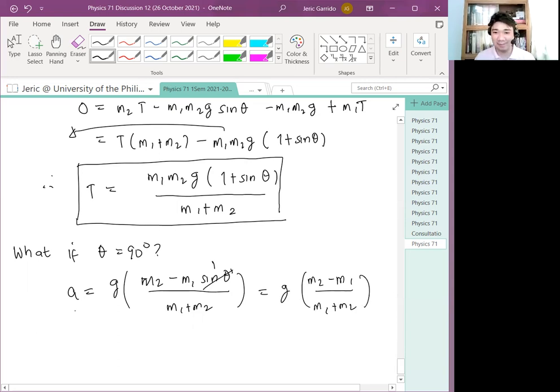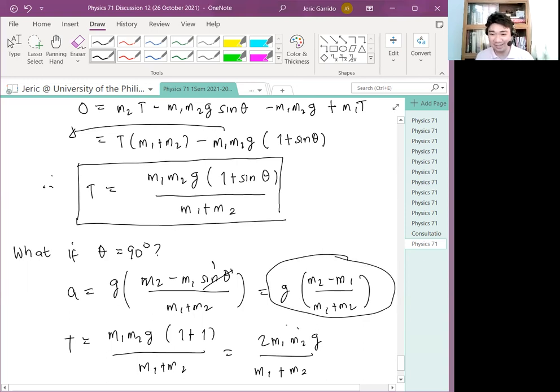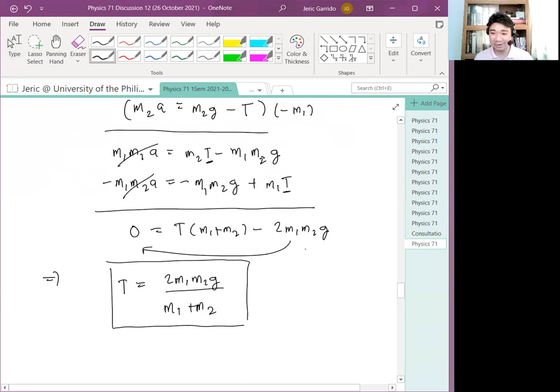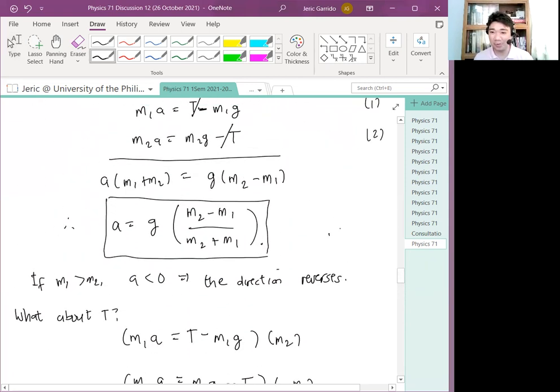What about the tension? The tension is simply M1M2G quantity 1 plus 1 all over M1 plus M2. And this is just 2M1M2G all over M1 plus M2. These two equations, didn't we just see them? This was from earlier. This one and this one.